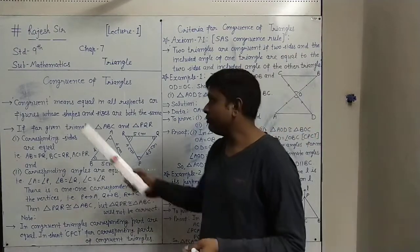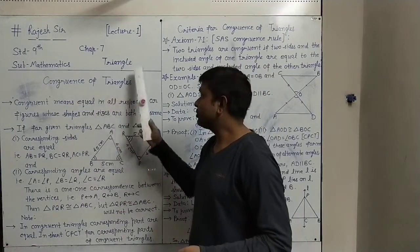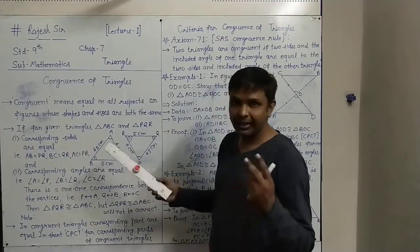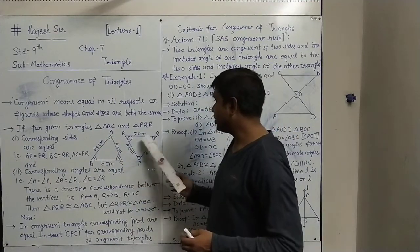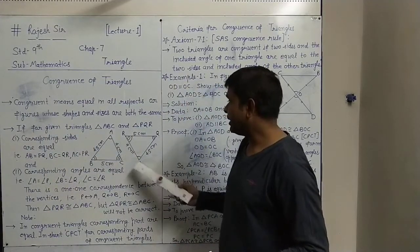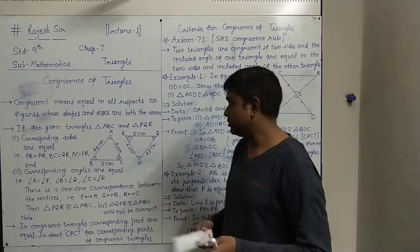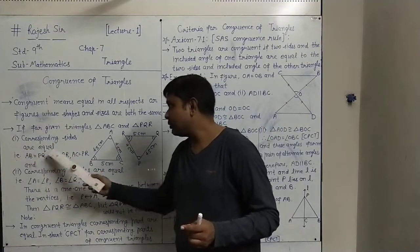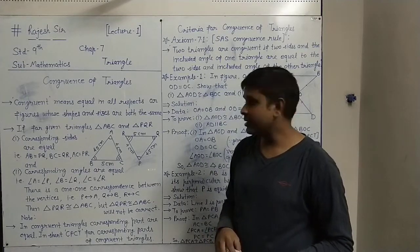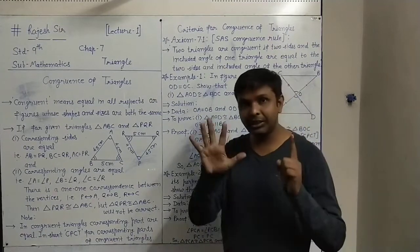Similarly, if we understand the meaning of congruence, we will now understand the congruence of triangles. For that we have taken two triangles — triangle ABC and triangle PQR. For these given triangles, two conditions must be followed. The first one is: corresponding sides are equal. In a triangle, there are a total of six parts — three sides and three angles.